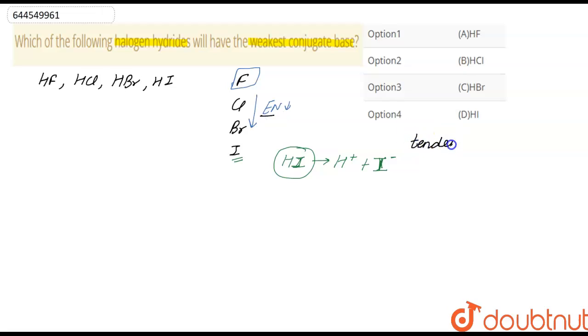It is the tendency to attract shared pair of electrons. If electronegativity of iodine is lower, then HI will easily lose H+ ions and I- ions in the solution.